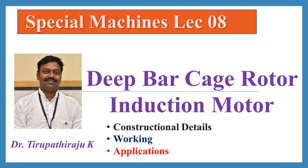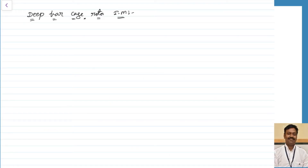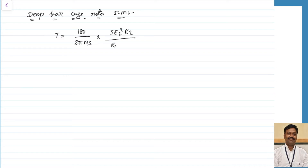Good morning all. Today we are going to discuss about deep bar cage rotor induction motor. Before proceeding, let us revise what we have studied in induction motors. The torque T is equal to (180/2πNs) × s × E2² × R2 divided by (R2² + sX2²). This is the torque equation we have seen.